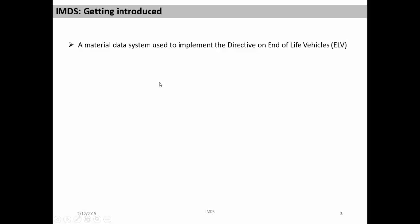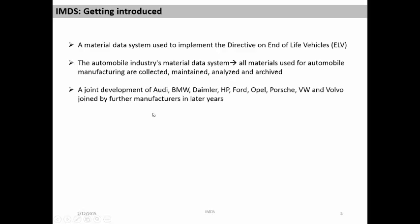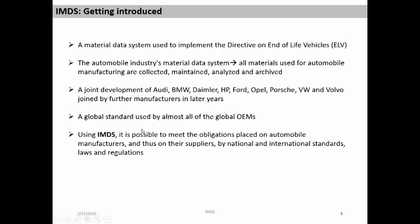To start with, this is a basic definition of IMDS — a material data system used to implement the directive of end of life of vehicles. It is the automobile industry's material data system; all materials used for automobile manufacturing are collected, maintained, analyzed and archived in the system. It's a joint development of Audi, BMW and some of the major OEMs, joined by further manufacturers in later years. It's a global standard used by almost all global OEMs. Using IMDS, it is possible to meet the obligations placed on automobile manufacturers and thus on their suppliers by national and international standards, laws and regulations.